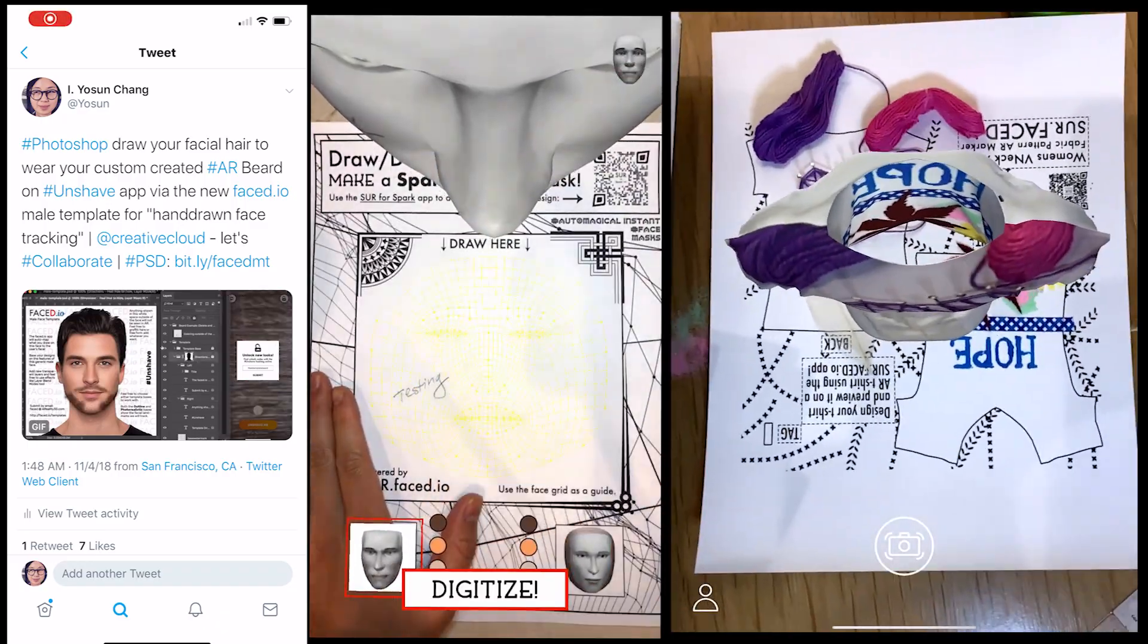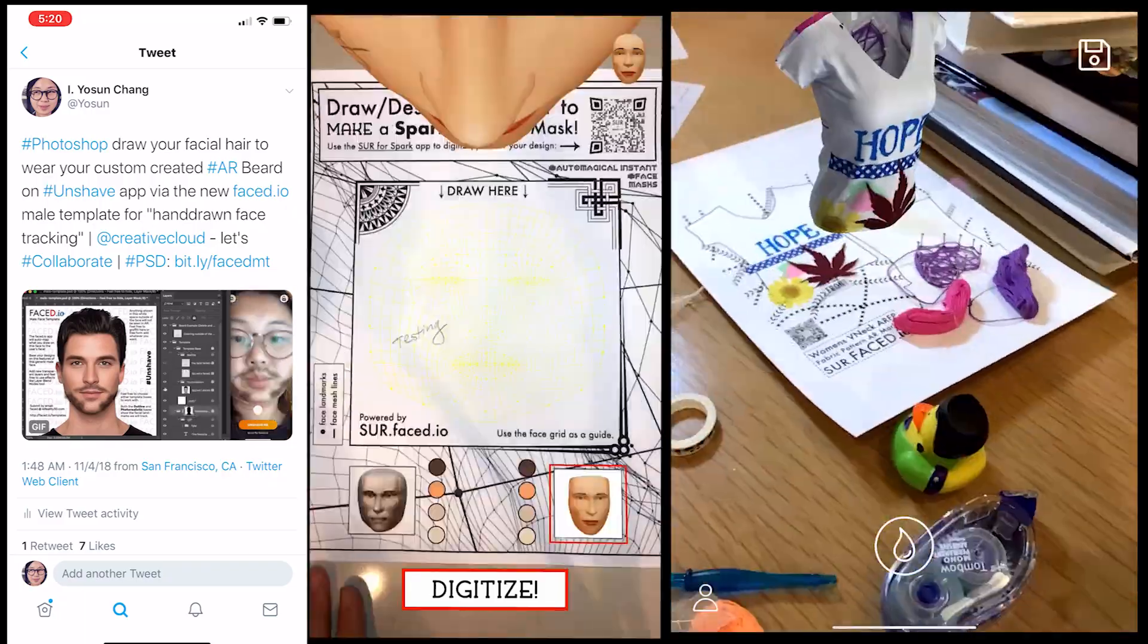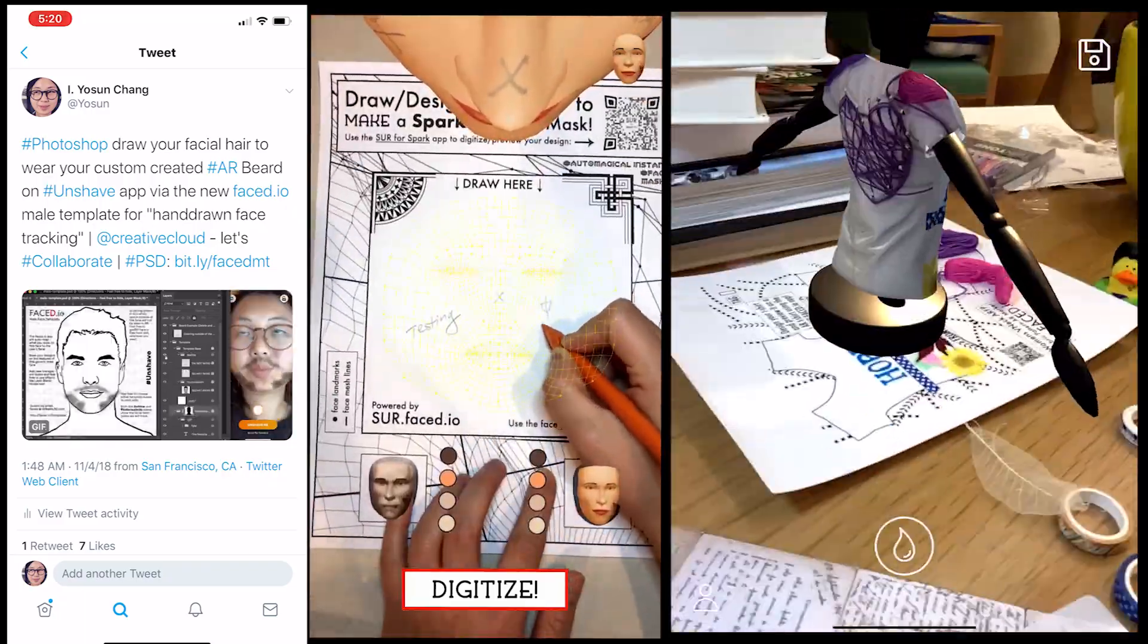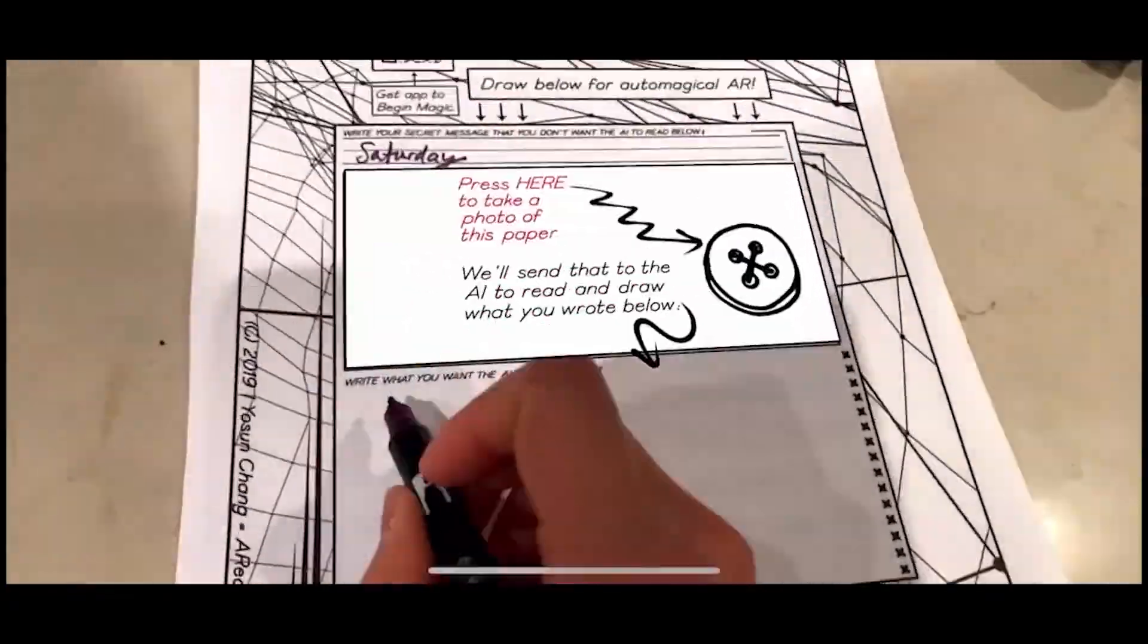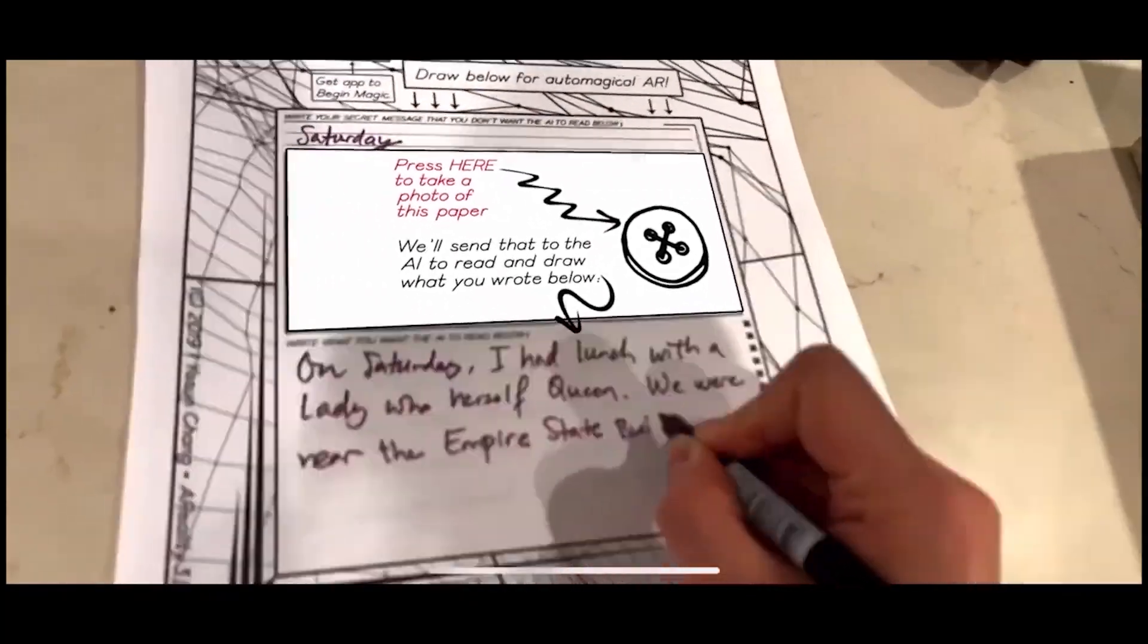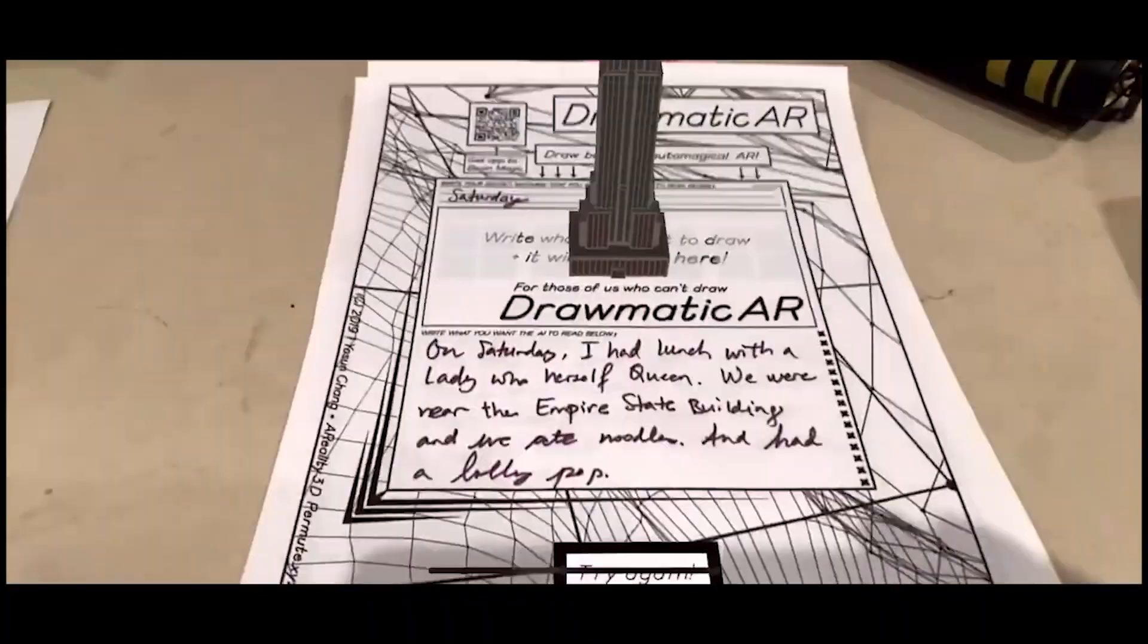This evolved into a platform I called Sir.Faced.io, which I presented at SIGGRAPH last year and also featuring clothing patterns and dramatic AR that lets you write stuff for AI to automagically augment 3D objects from what you wrote.